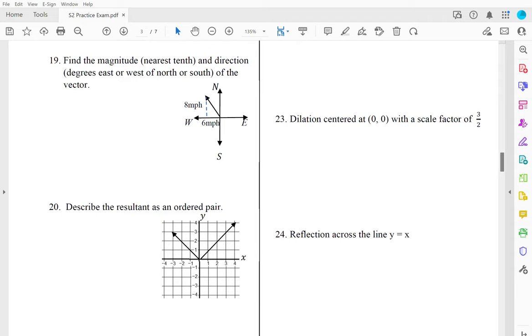Magnitude and direction. Magnitude, remember, is the length of the hypotenuse. You do that by using your Pythagorean theorem. So the hypotenuse is equal to the square root of 8 squared plus 6 squared. That's the square root of 36 plus 64, which is the square root of 100, which is 10. So that's your magnitude.